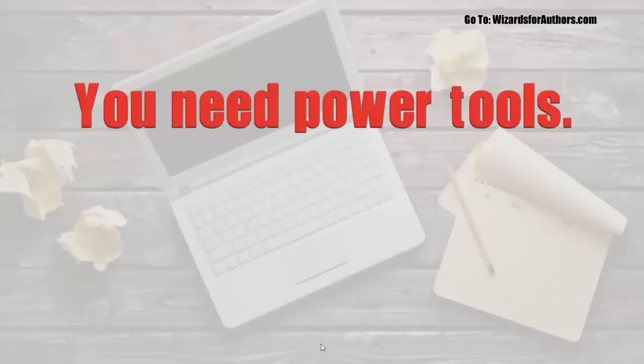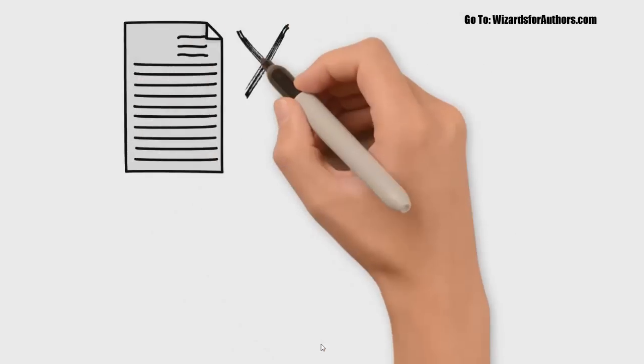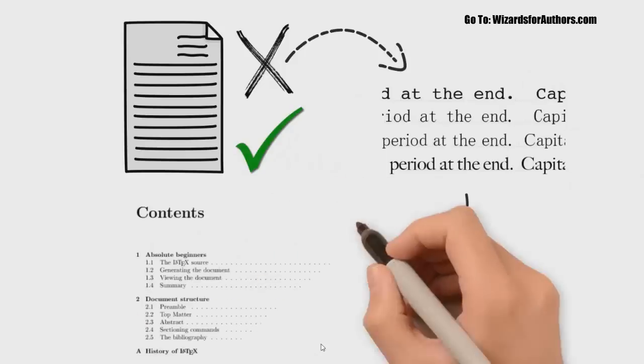You need power tools. You need Cheetah for Writers. Power tools to format or reformat your manuscript, reset sentence spacing, create an automatic table of contents,